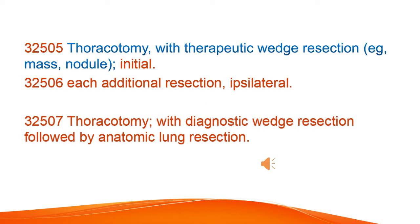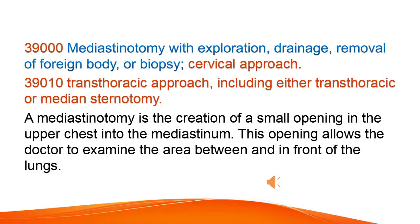Thoracotomy with therapeutic wedge resection, for example mass or nodule, initial and each additional resection, ipsilateral. Thoracotomy with diagnostic wedge resection followed by anatomic lung resection. Mediastinotomy with exploration, drainage, removal of foreign body, or biopsy via cervical approach.